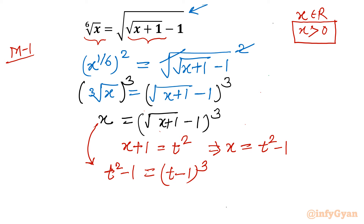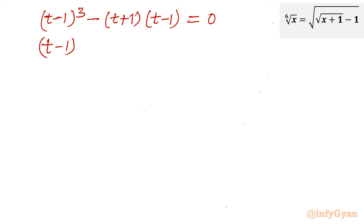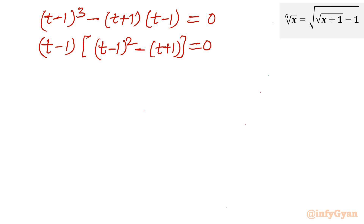Using the difference of two squares, left hand side is (t plus 1)(t minus 1), and right hand side remains (t minus 1) cubed. Taking all terms to one side: (t minus 1) cubed minus (t minus 1)(t plus 1) equals 0. The common factor is (t minus 1), so taking it out: (t minus 1) times [(t minus 1) squared minus (t plus 1)] equals 0. Setting each factor to zero: t minus 1 equals 0, or (t minus 1) squared minus (t plus 1) equals 0.